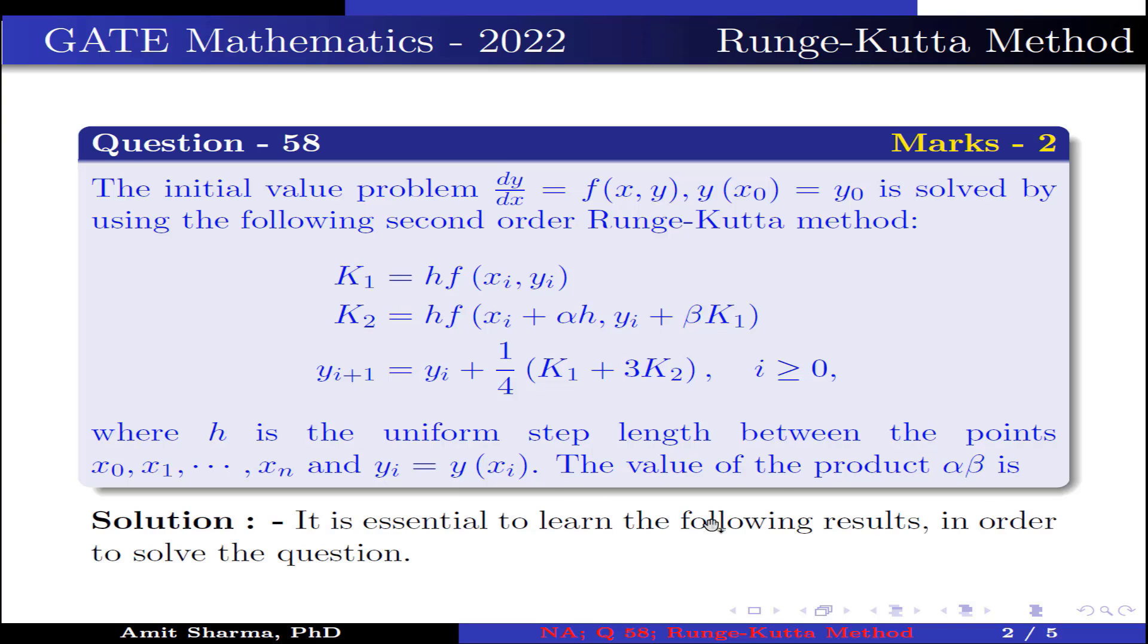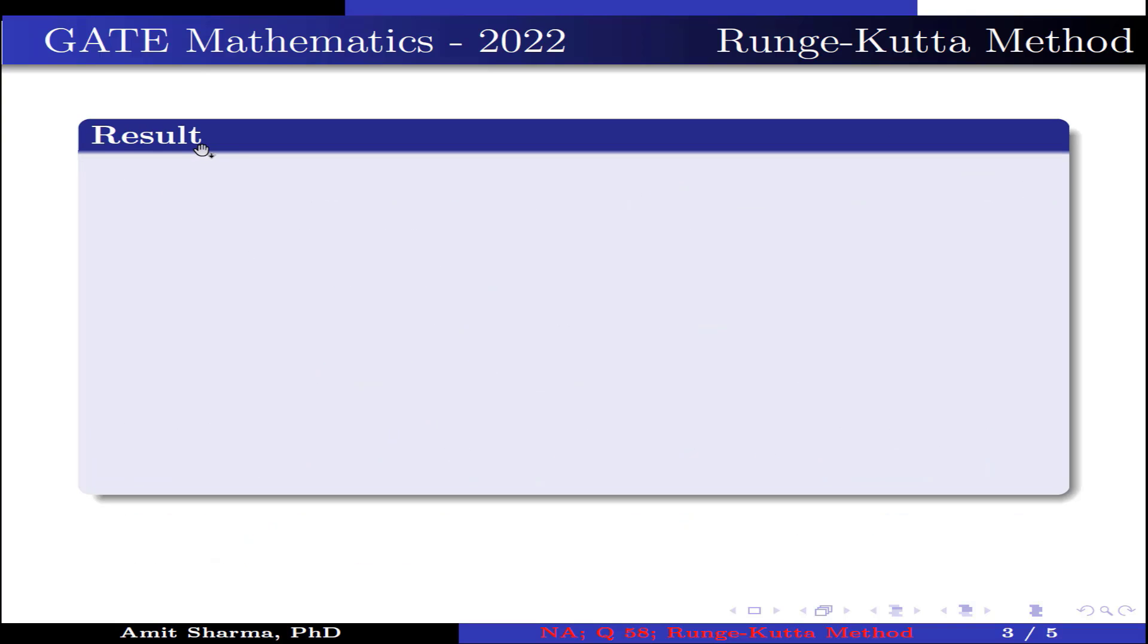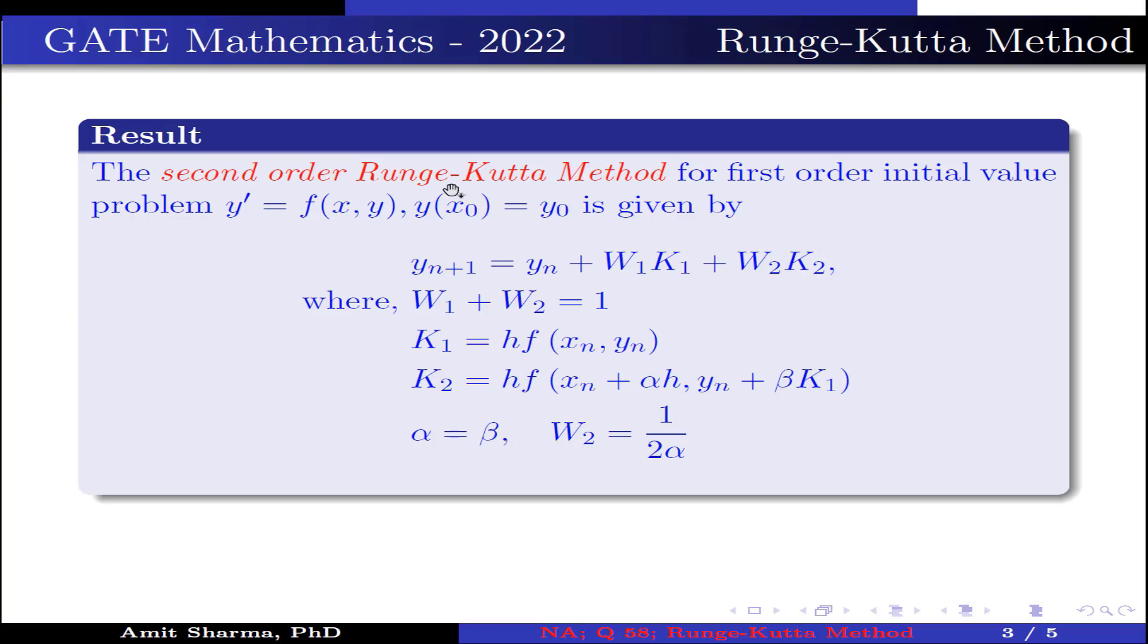It is essential to learn the following result in order to solve the question. Result. The second order Runge-Kutta method for first order initial value problem y' = f(x,y), y(x0) = y0 is given by yn+1 = yn + w1·k1 + w2·k2, where w1 + w2 = 1, k1 = h·f(xn, yn), k2 = h·f(xn + αh, yn + βk1), where α = β and w2 = 1/(2α).